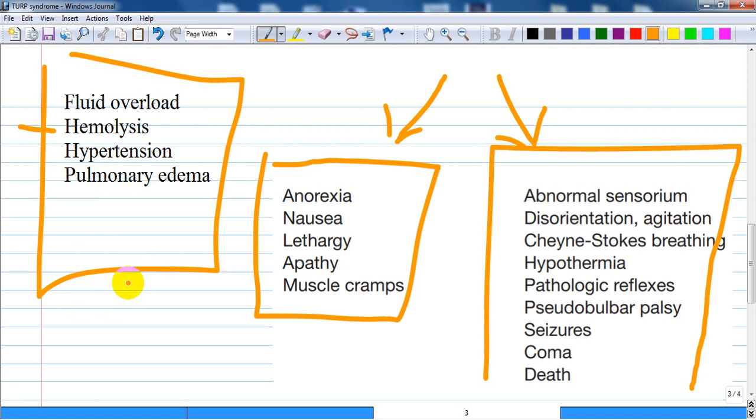If glycine irrigant is used, transient blindness can occur. This is thought to result from the inhibitory neurotransmitter effect, as you know glycine is an inhibitory mediator in the central nervous system.